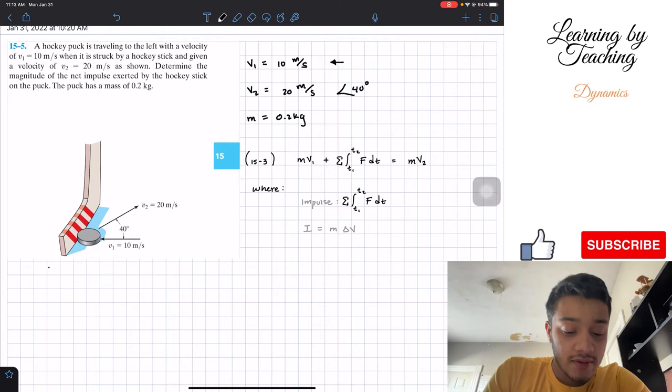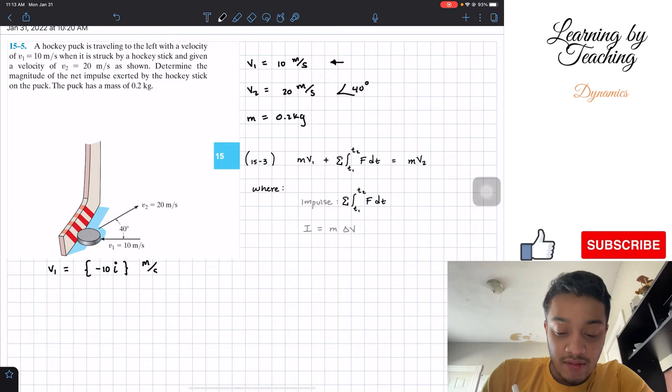Let us start by decomposing v1. We got v1, the vector v1, is 10 meters per second to the left. So I am going to give that negative 10i. It is saying negative 10 in the x direction, the unit is meters per second.